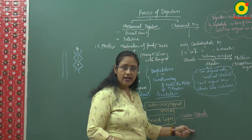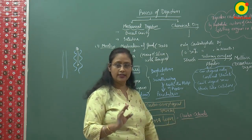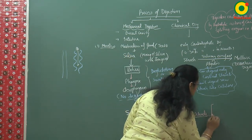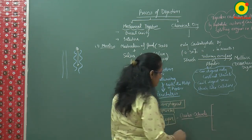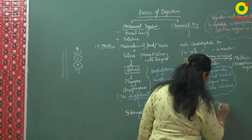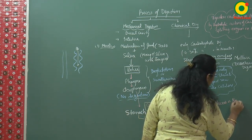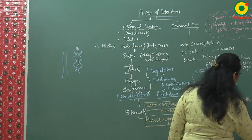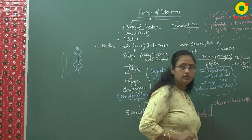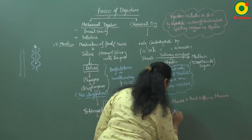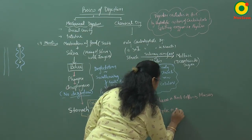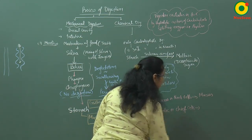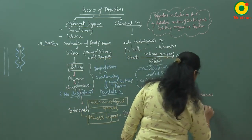Gastric glands are made up of three types of cells. First is mucus or neck cells — they secrete mucus. Second is peptic or chief cells — they secrete the enzyme pepsin.